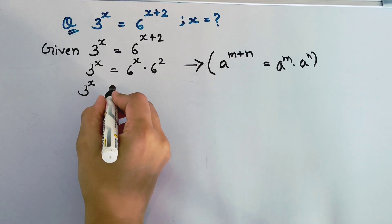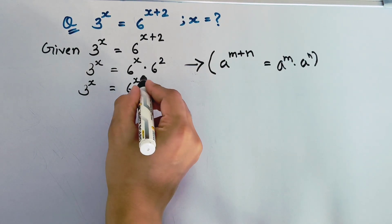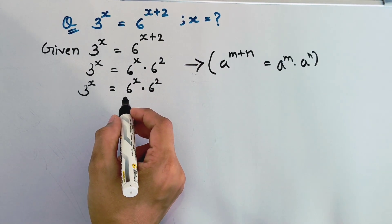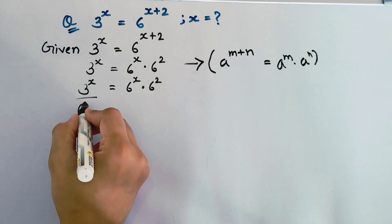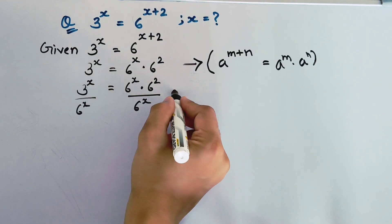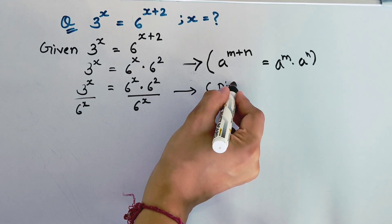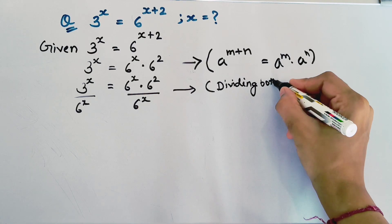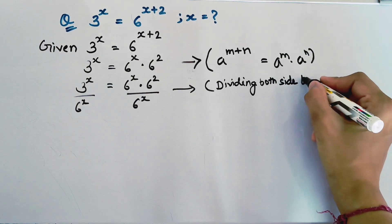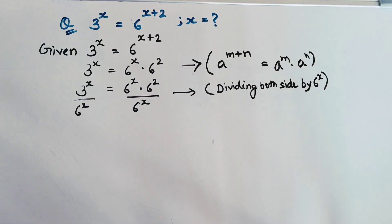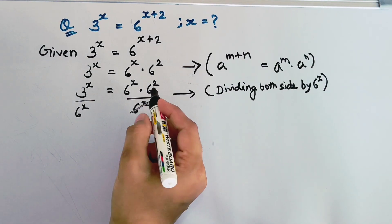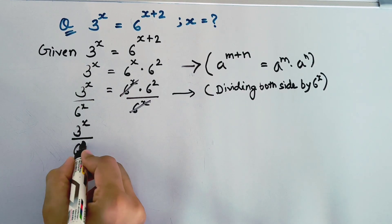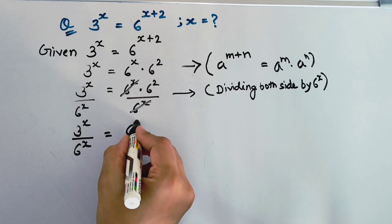Now, we have 3 to the power x equals 6 to the power x into 6 to the power 2. We will divide both sides by 6 to the power x, so this 6 to the power x will cancel. We now have 3 to the power x divided by 6 to the power x equal to 6 squared.